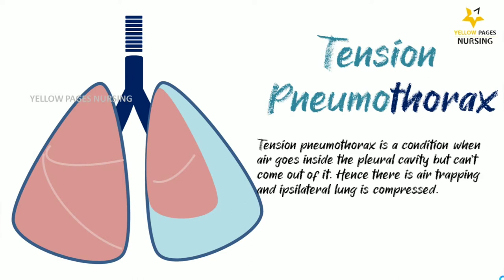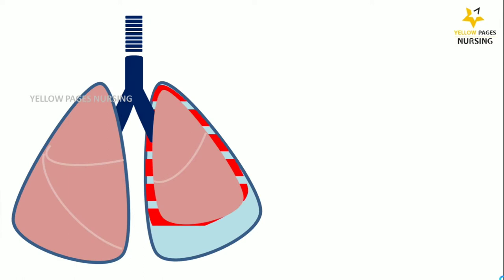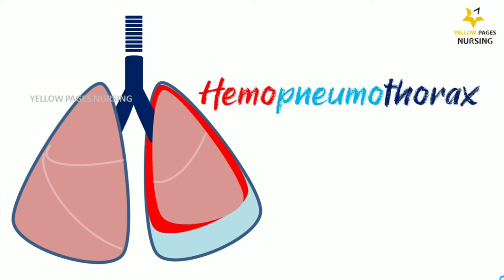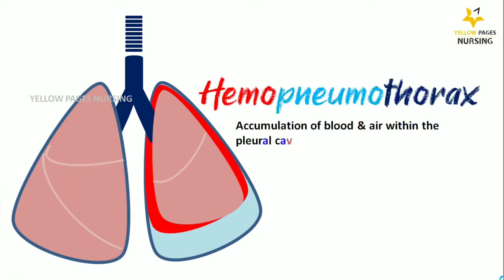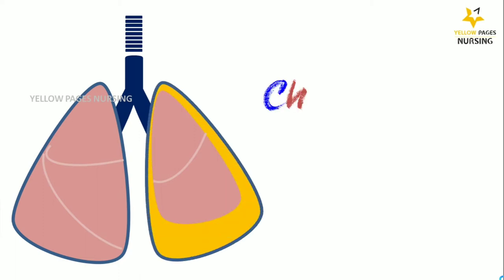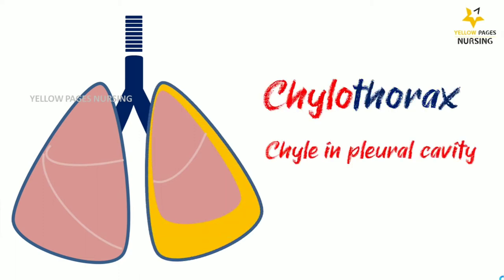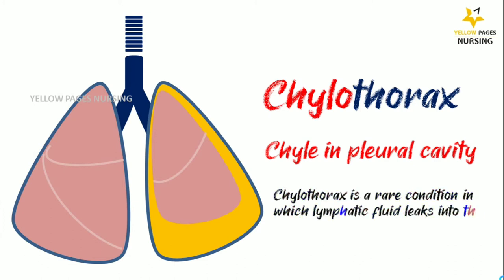Next is hemopneumothorax, which is the accumulation of both blood and air within the pleural cavity. Next is chylothorax, a rare condition in which lymphatic fluid leaks into the space between the lung and the chest wall. When this fluid builds up, it can cause severe cough, chest pain, and difficulty breathing.